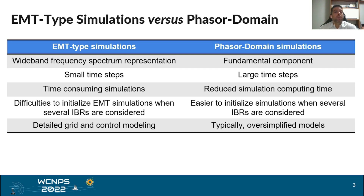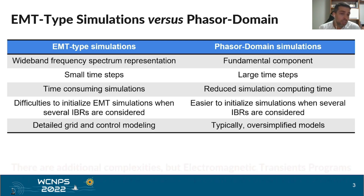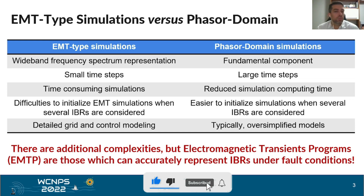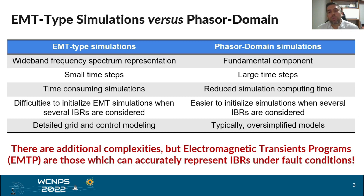On the other hand, when we consider phasor domain simulations, they focus only on the fundamental component, such that large time steps can be used, reducing the simulation computing time. They are also easier to initialize when several IBRs are considered. But typically these simulations consider oversimplified models, which can be unrepresentative depending on the transient events that affect protection. Based on this comparison, we can conclude that there are additional complexities when using electromagnetic transient programs, but these programs are those which can accurately represent IBRs under fault conditions, including all transient events relevant to a protection study with IBRs.